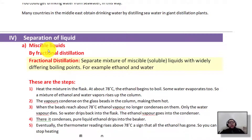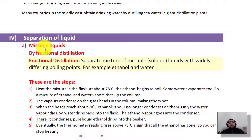For example, when you add alcohol and water together, both are going to mix together — those are miscible liquids. Immiscible liquids are like oil and water: when you put them together, each one takes a separate layer and they do not mix. Miscible liquids mix together in one layer.